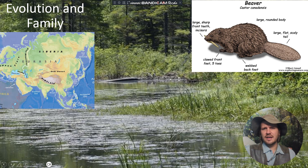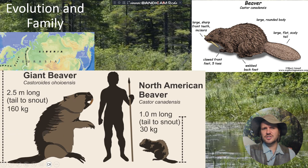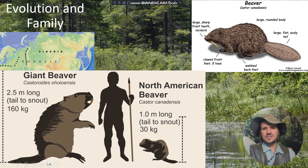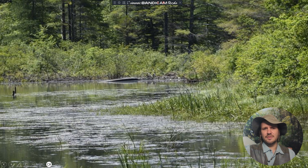But believe it or not, the modern-day beaver actually shared its home with another kind of beaver, which was a heck of a lot bigger. This is the giant beaver, Castoridae's ojionensis. This beaver was almost as big as a man, but because of special habitats as well as the changes that followed, this creature couldn't really adapt too well and as a result died out. The modern beaver managed to survive and became the animal that we know of today.